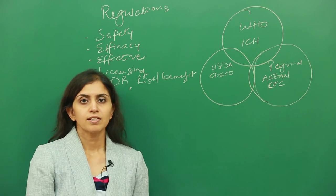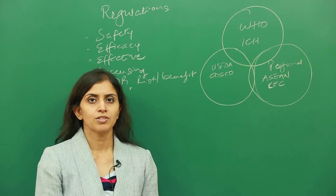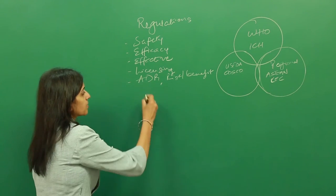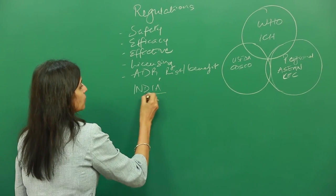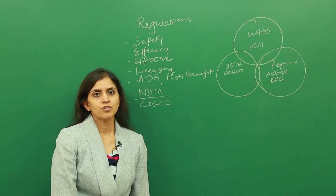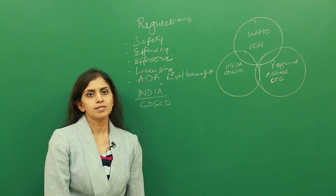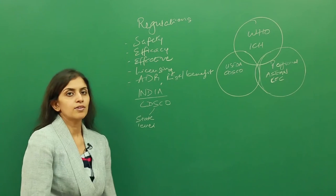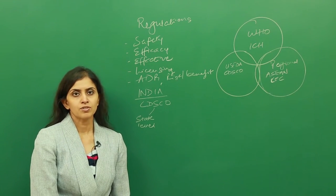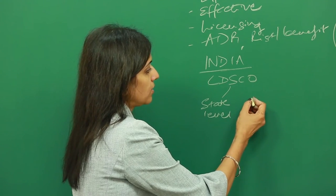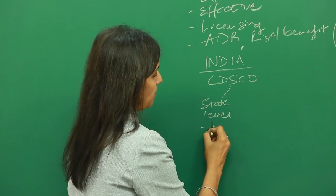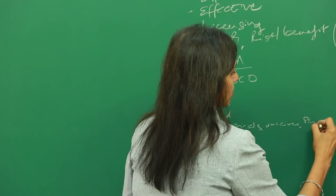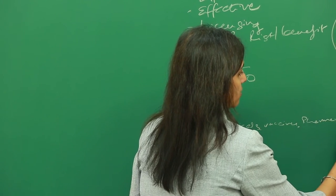Every regional agency defined by continents or regions is involved in regulatory aspects of medications. In India, the principal regulatory body is the Central Drug Standards and Control Organization, also known as CDSCO. At the state level, CDSCO has state-level authorities involved with regulatory functions. CDSCO handles biologicals, vaccines, pharmaceuticals, etc.